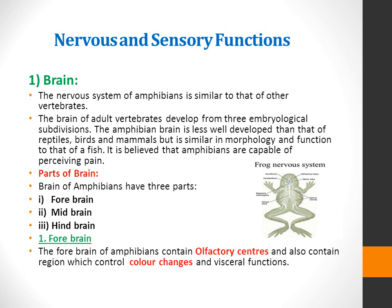From this slide we will discuss the brain of a typical amphibian. The nervous system of amphibians is similar to that of other vertebrates. The brain of adult vertebrates develops from three embryological subdivisions. The amphibian's brain is less well developed than that of reptiles, birds and mammals, but is similar in morphology and function to that of a fish. It is believed that amphibians are capable of perceiving pain.